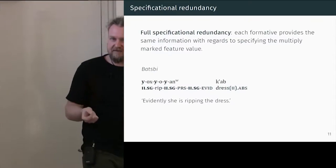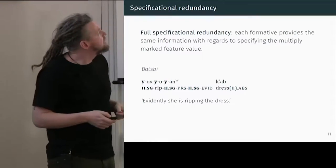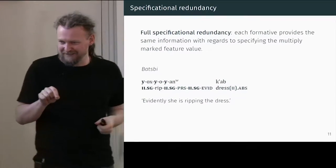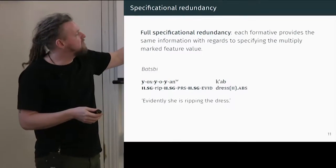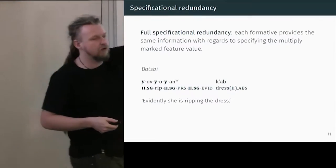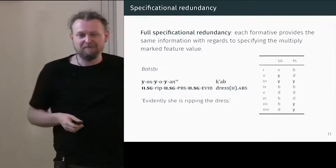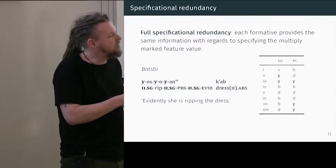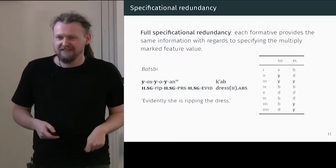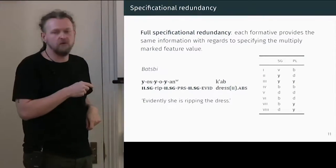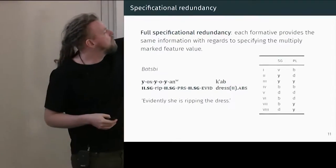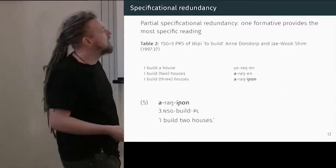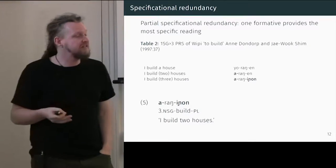Parallel to this is what I'm calling specificational redundancy, which is slightly harder to see. Contributional redundancy is what you're bringing to the table. In the Batsby example, these Y's are gender two singular, and we know that because the controller is gender two. However, the Batsby gender paradigm is complex — this Y could be gender two singular, gender three of either number, or gender seven or eight in plural. If we didn't have that controller, there would be a huge amount of ambiguity. But regardless, removing one doesn't reduce the uncertainty of this pattern.